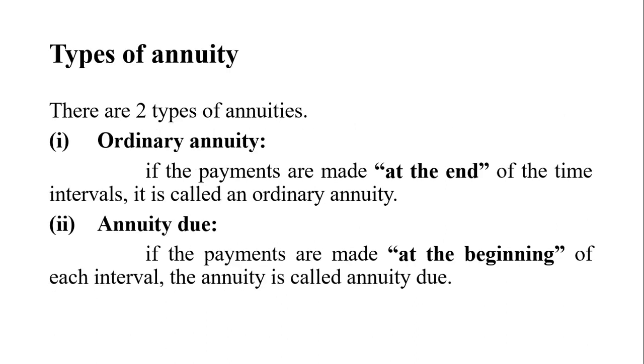There are two basic types of annuities. The first one is ordinary annuity and another is annuity due. Ordinary annuity: if the payments are made at the end of the time interval, it is called an ordinary annuity.